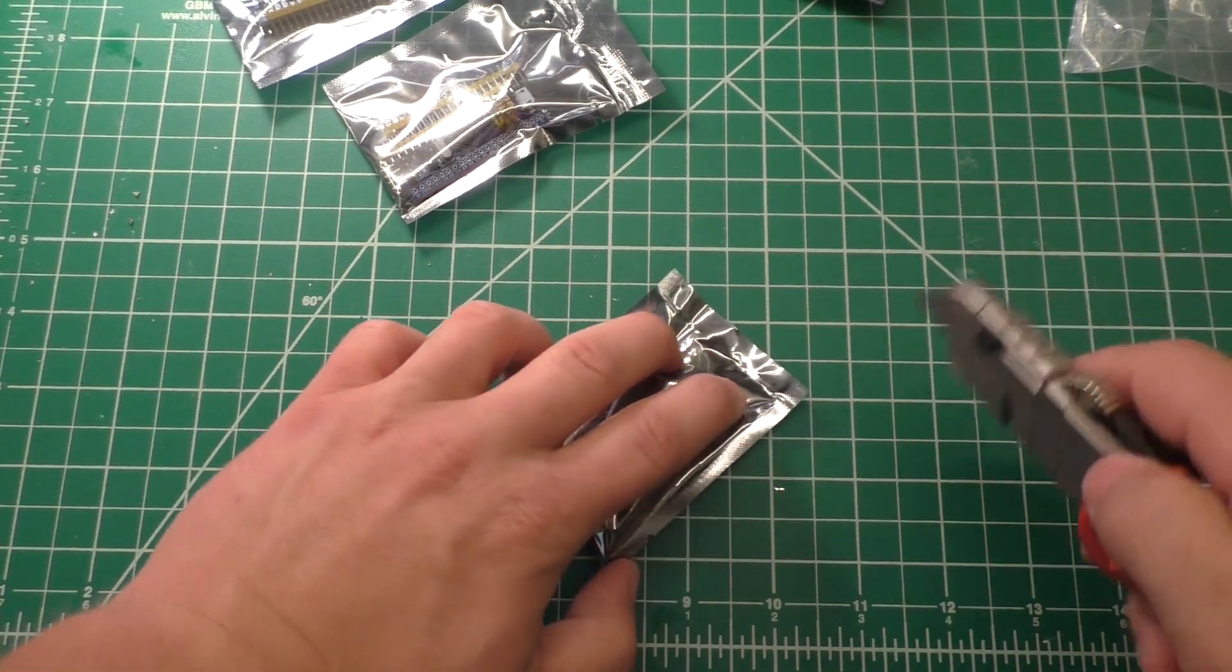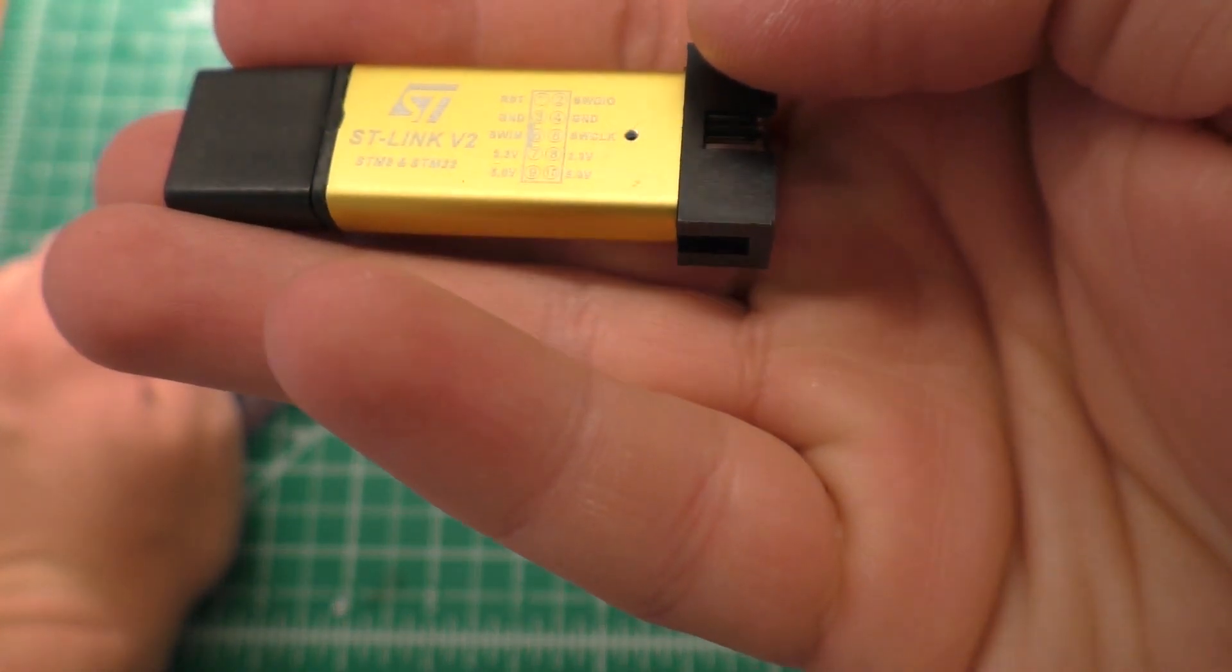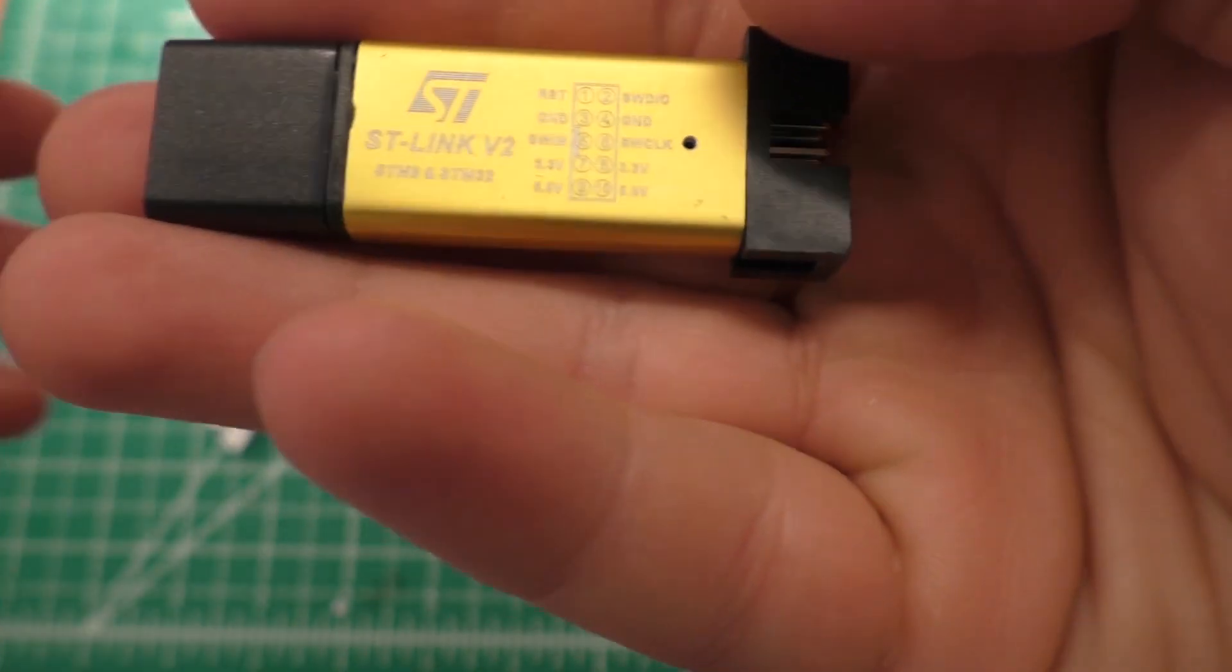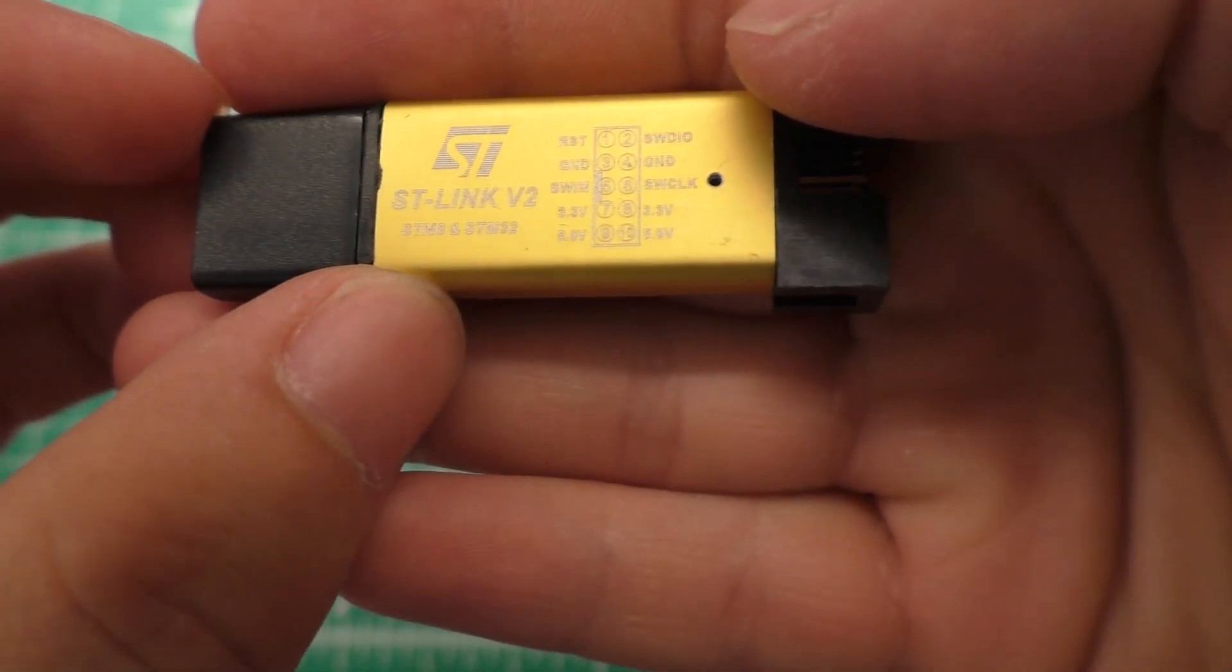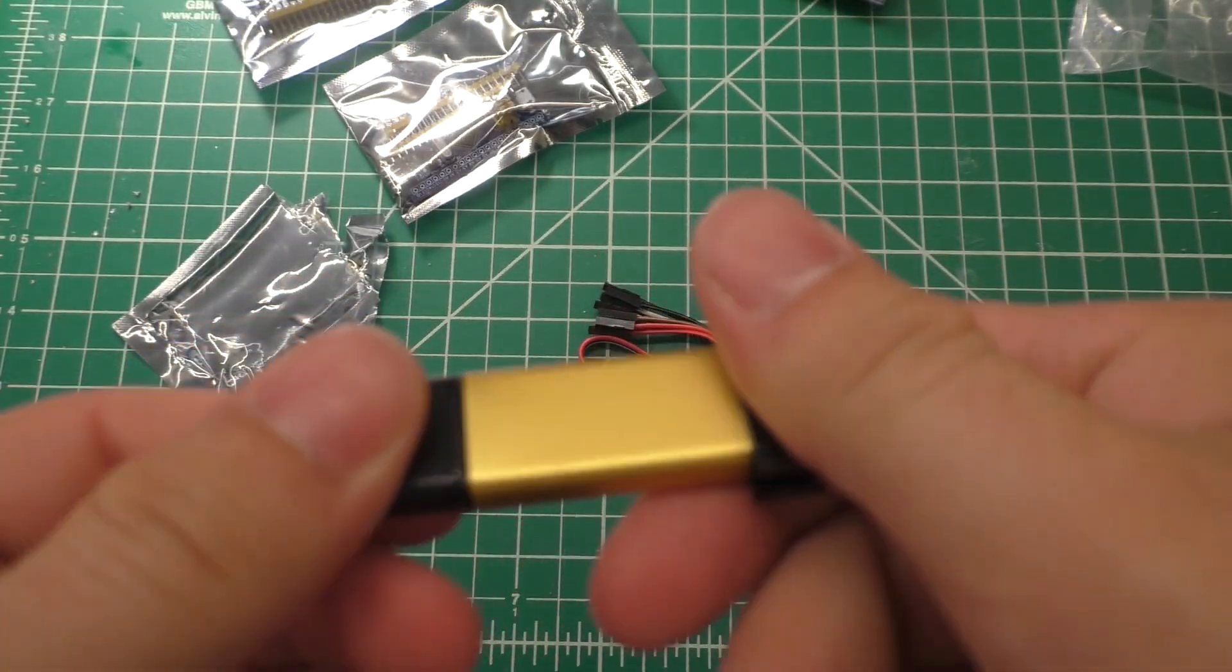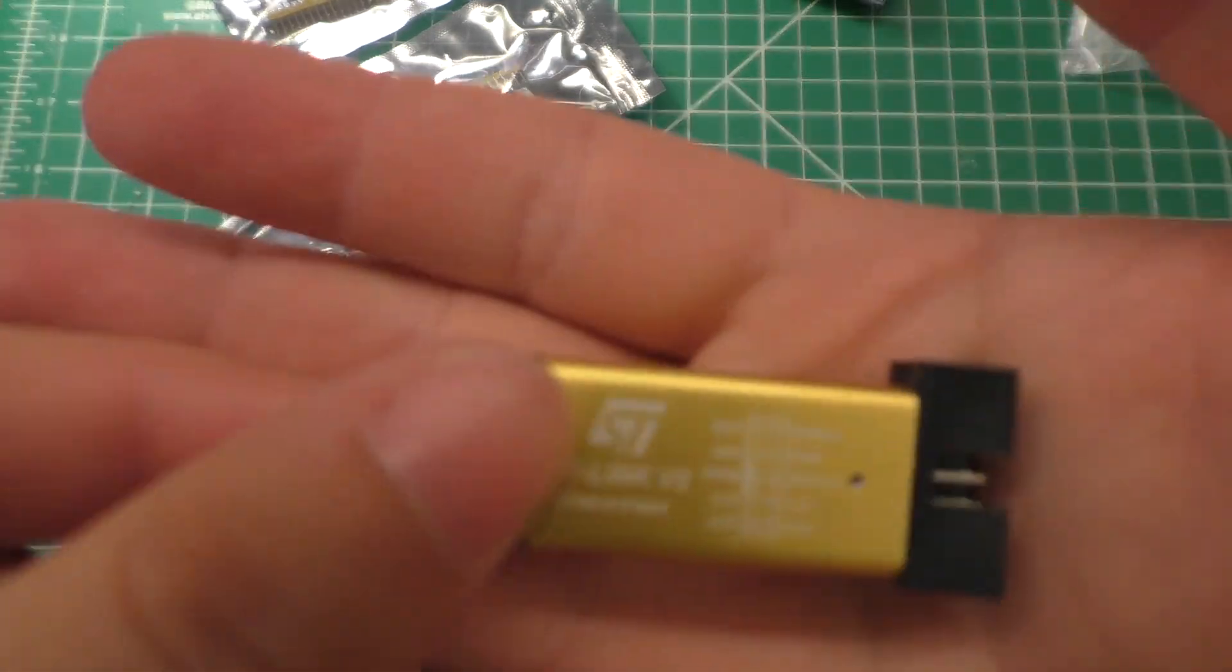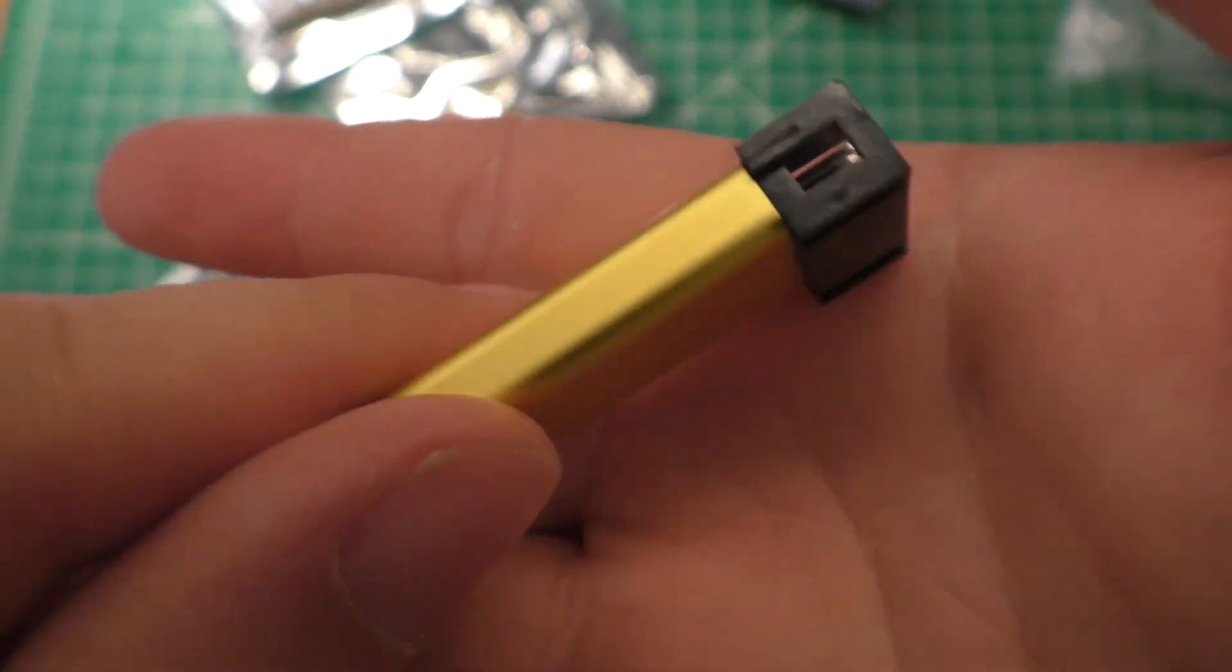Alright, so this little guy is the ST Link v2 programmer, so you can see there we've got STM8 and STM32. This is more than likely a knockoff of the ST Link programmer, but it should hopefully still work. And we've got the pins on the back side there and then your programming cable.